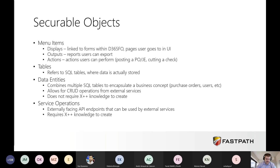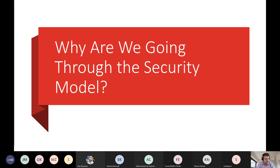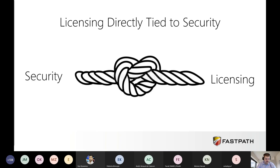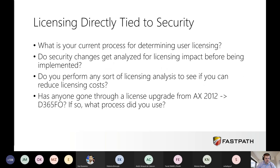The question often asked is: why go through a security overview when we're talking about licensing? The biggest reason is that licensing is tied directly to security — any changes you make to security could impact licensing. That's what makes AX and F&O slightly unique in the ERP space. Other systems, even within Microsoft like BC and CE, don't have this licensing model where what you're assigned actually drives what licenses you have. In most other systems, the licenses assigned drive what you can do in the application — and that's not true within AX and F&O.